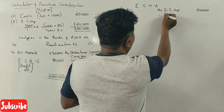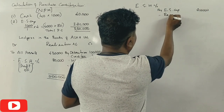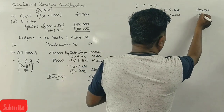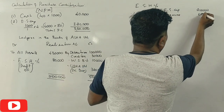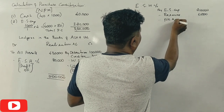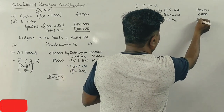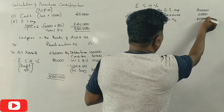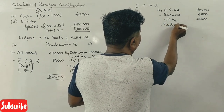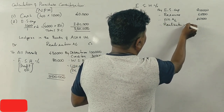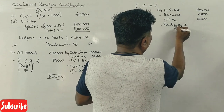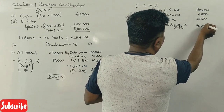Additionally, reserves amount to Rs.65,000. The profit and loss account balance is Rs.25,000. The realization account shows a profit of Rs.70,000. So the total credit side of the equity shareholders account is Rs.3,60,000.